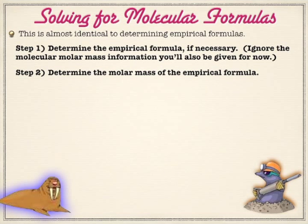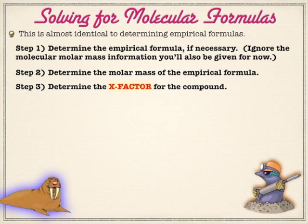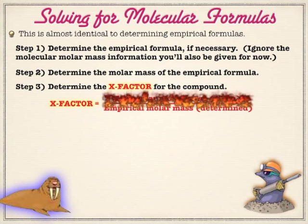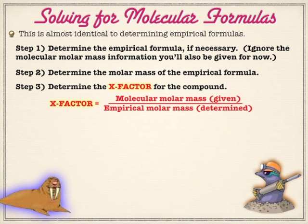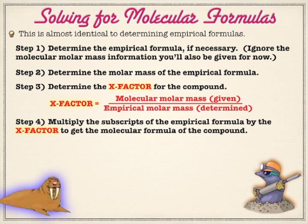What we're going to do is determine the molar mass of the empirical formula — and it's going to feel like you're going backwards, but you're not. Then you compare the molar mass of the empirical formula with the molar mass you were given, and determine what I call the x-factor. The x-factor is simply the ratio of the two. If they're the same, the empirical formula is the molecular formula. If not, you take the x-factor and multiply it by the subscripts to get the actual molecular formula subscripts.